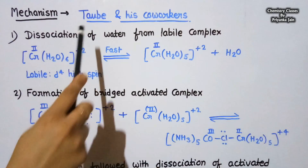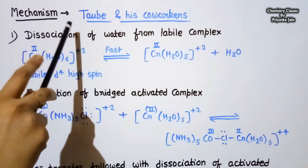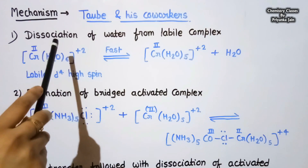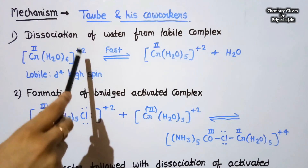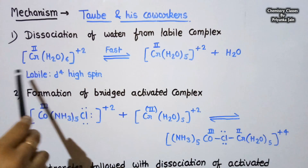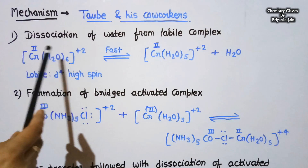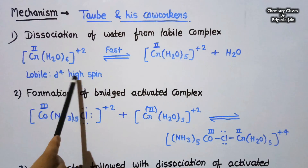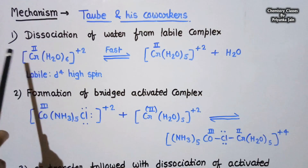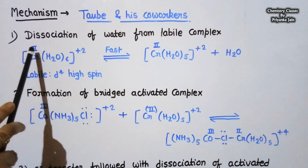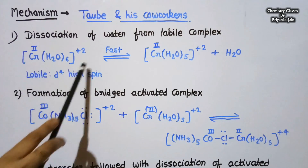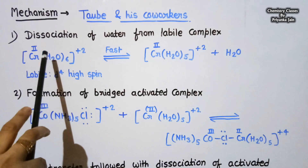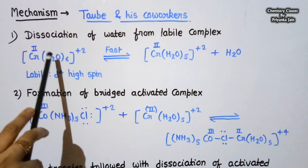The first definite proof of this mechanism was given by Taube and his co-workers. In the mechanism of inner sphere reactions, the two complexes are connected via a bridging ligand and electron transfer takes place through this ligand. The first step is the dissociation of water from the labile complex — the chromium complex in the +2 oxidation state. This complex undergoes a fast equilibrium reaction and dissociates, removing one H2O ligand to form [Cr(H2O)5]²⁺.